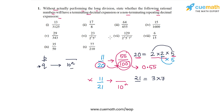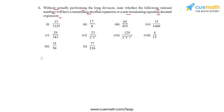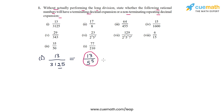Now let's apply these ideas to all the numbers given. The first number is 13/3125. If you prime factorize 3125, you find it has only fives — in fact it equals 5^5. So this number 13/5^5 has a denominator with only fives and no other prime factors, which means it will have a terminating decimal expansion.